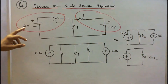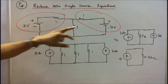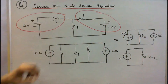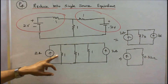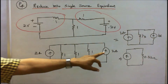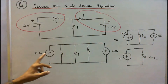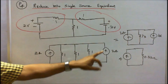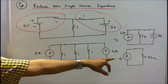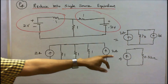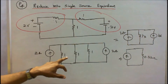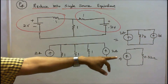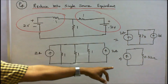I convert each voltage source into a current source. This is 2 amps with 1 ohm, and similarly this is 2 amps with 1 ohm. The direction is the same, so 2 plus 2 is equal to 4 amps. The equivalent resistance is 1 by 3, that is equal to 0.33 ohms. This is the single source equivalent.